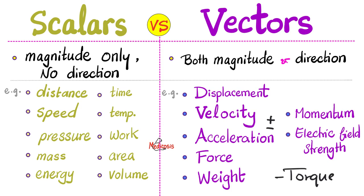How about electric field strength? It has a direction, so it is a vector. How about magnetic field? Just like electric field, it is also a vector. Both magnetic field and electric field are vector fields, meaning we have different directions — like the experiment of exposing iron filings to a magnet.